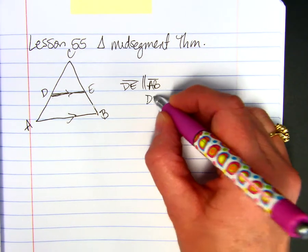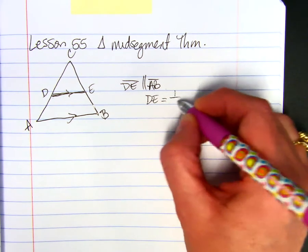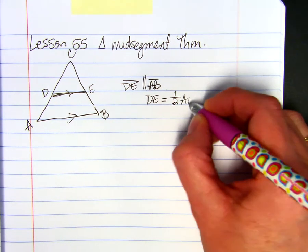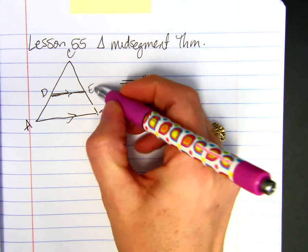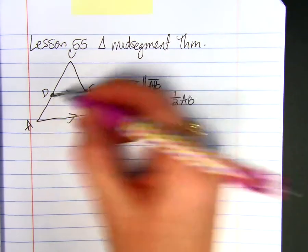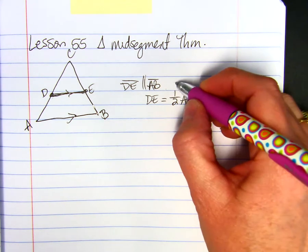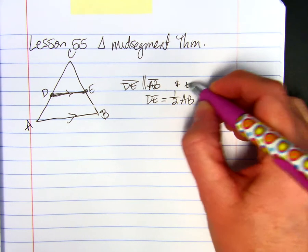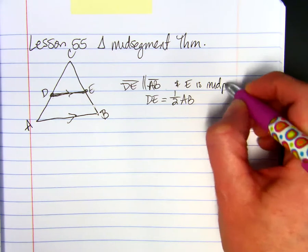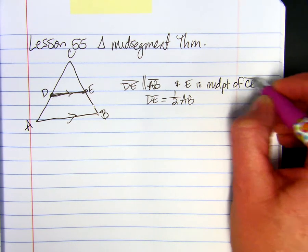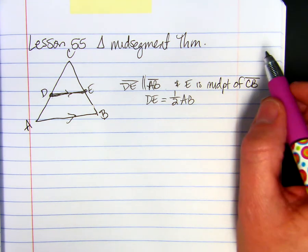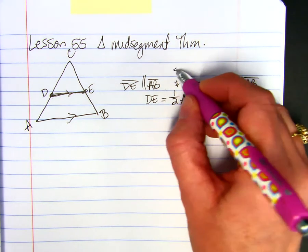then D, E will equal one-half of the length of A, B. However, these have to be the midpoints. So they're parallel, and E is the midpoint of CB, and D is the midpoint of A, C.